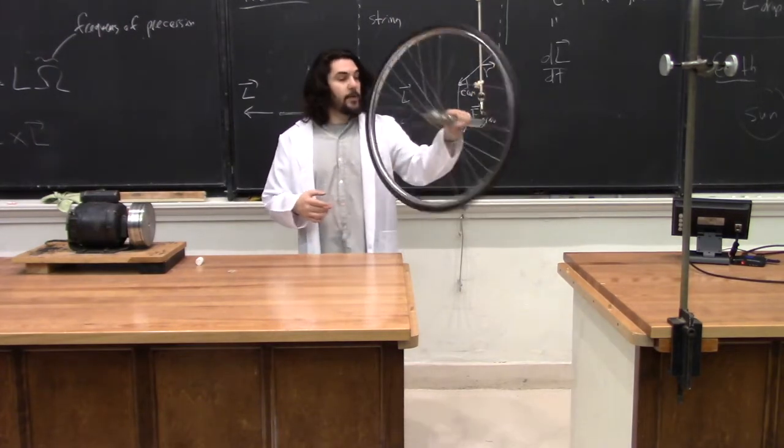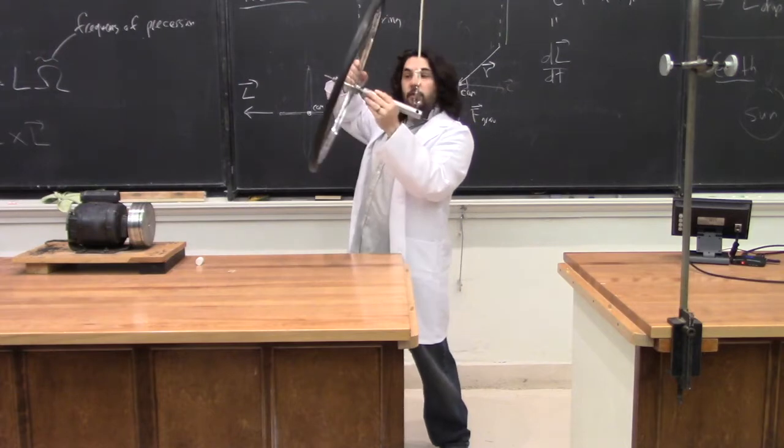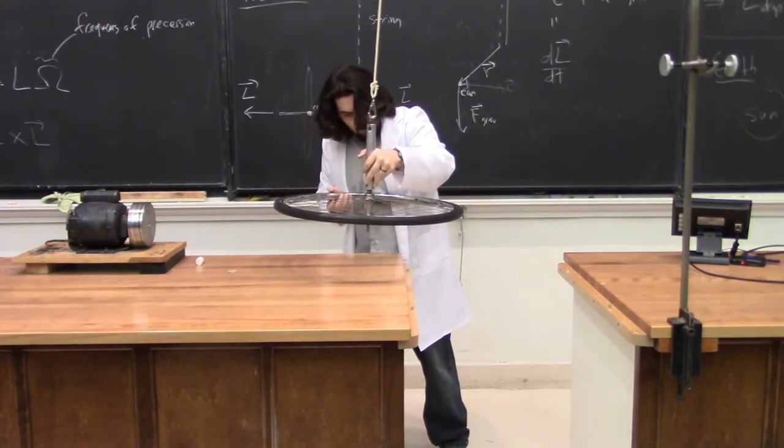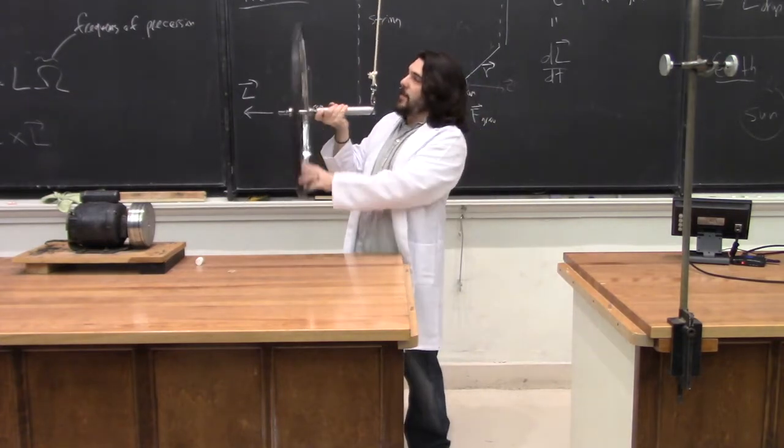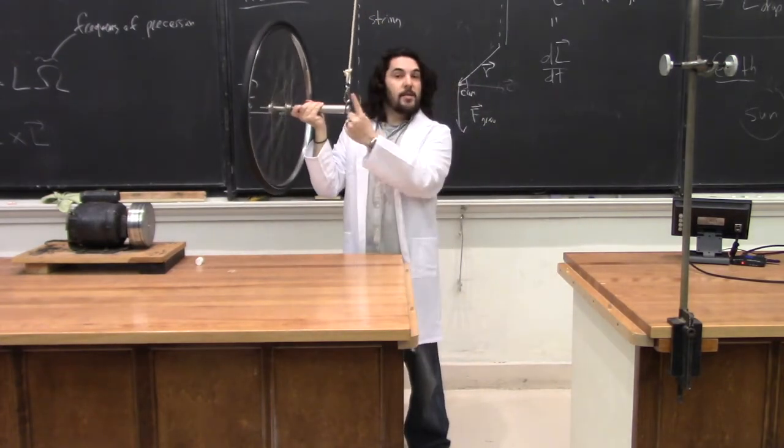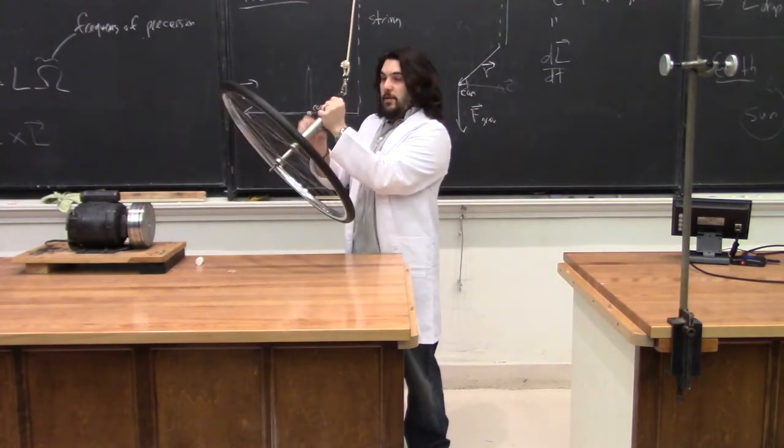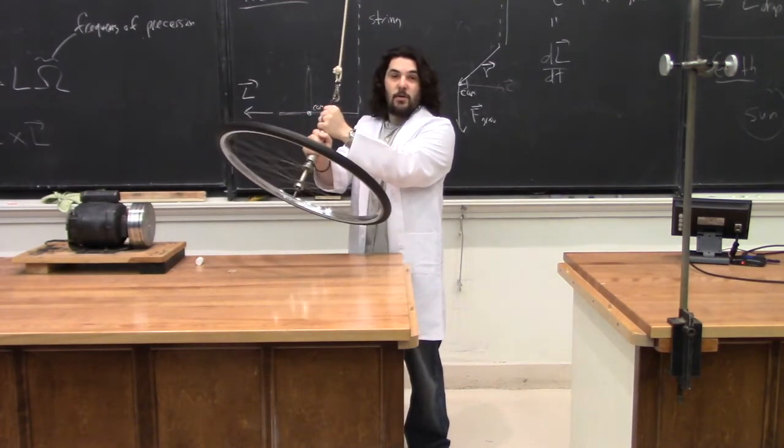How an object precesses is probably going to be easier to tell when we use this bike wheel. Gravity is naturally going to want to force the wheel down into this position. As with when I held the bike wheel, if it's spinning like this, its angular momentum this way is zero. So when it falls,